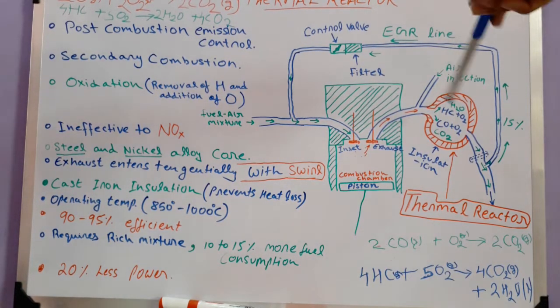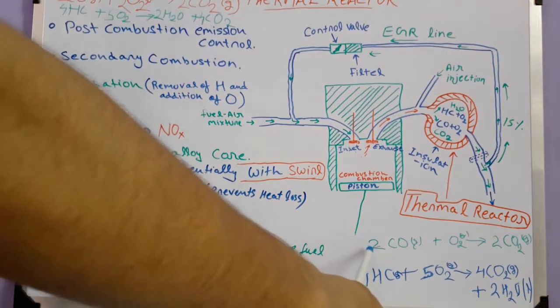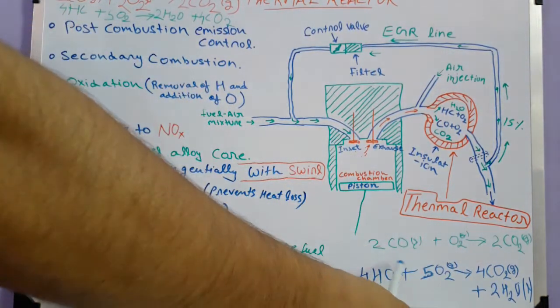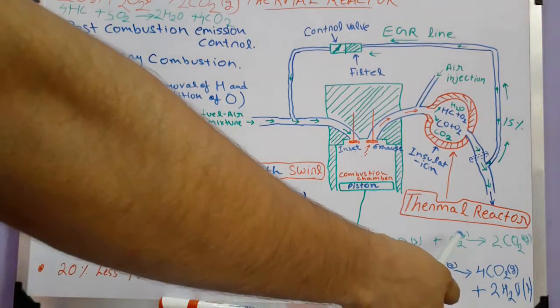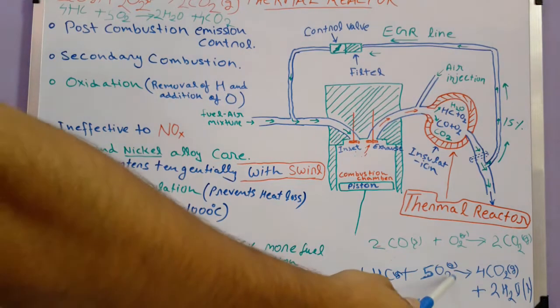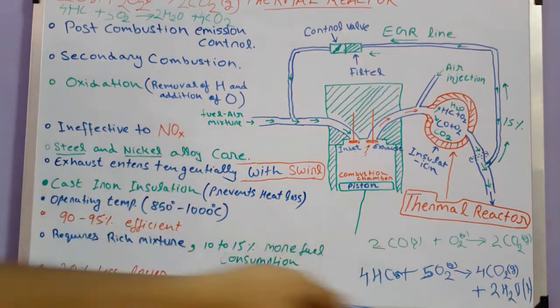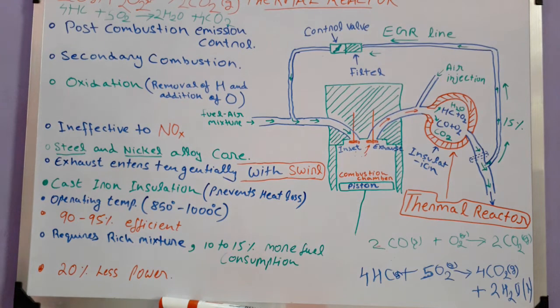Let's have a look at the chemical reactions. Carbon monoxide combines with oxygen to form CO2, and hydrocarbons combine with oxygen to form CO2 and H2O. But thermal reactors are quite ineffective for nitrogen oxides.